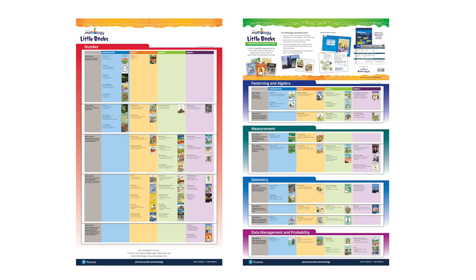There are 13 big ideas in the progression, spread out over 5 strands, as shown on this handy poster. Mathology Little Books explore each big idea and follow a pathway from simple to more complex. This allows you to choose from several books, all exploring the same concept to match your students' needs.